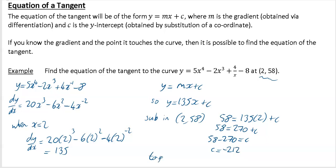So the last line: just say the tangent is — our m was 135, so 135x. And your c is minus 212, sorry. So your tangent is y is equal to 135x minus 212.